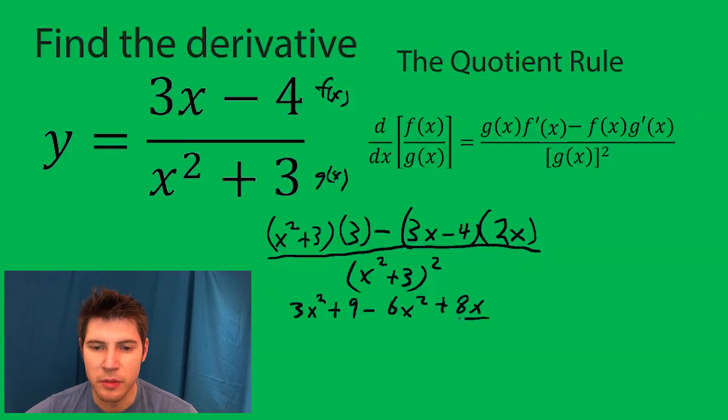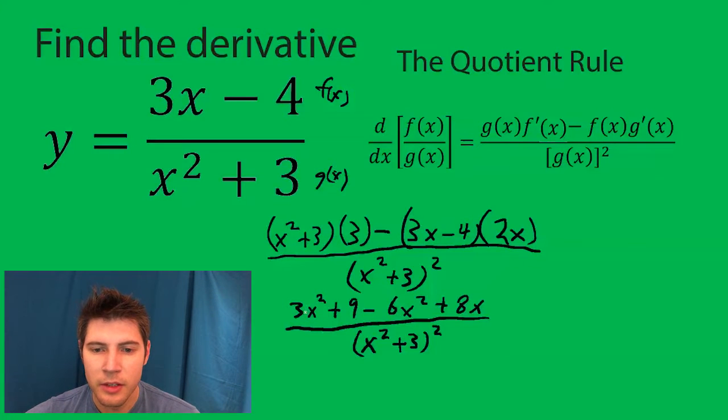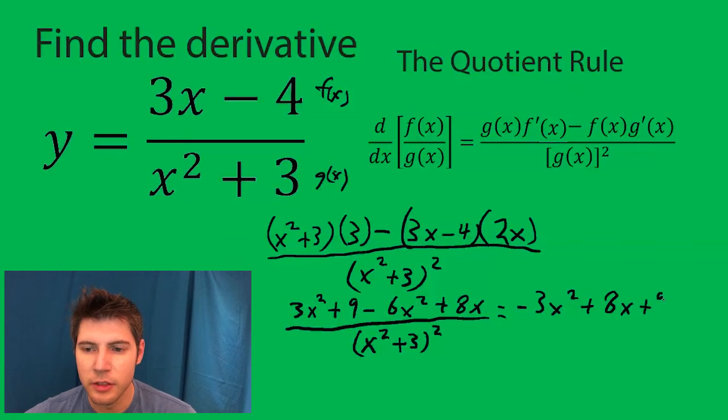And I'm gonna leave the bottom like this. We could foil it out if we wanted to. But usually you want to leave your answers as factored out as you can in case stuff cancels. So now we're gonna combine like terms. Negative 3x squared plus 8x plus 9 over x squared plus 3 squared.